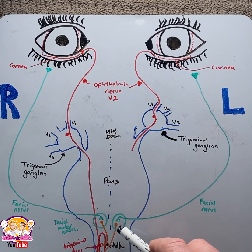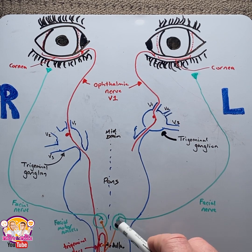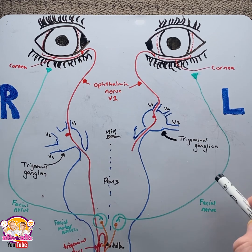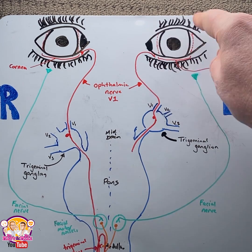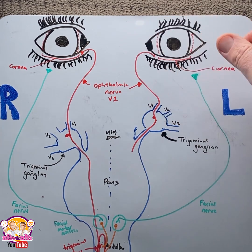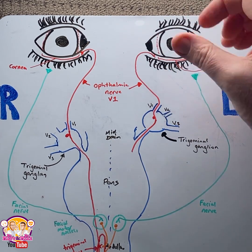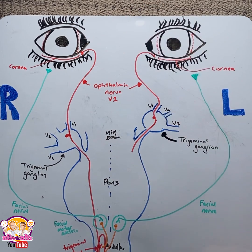Because we've also activated the left facial nerve nuclei, the left facial nerve will also be activated, which innervates the orbicularis oculi muscle on the left side, also causing it to blink. And that is the consensual response.